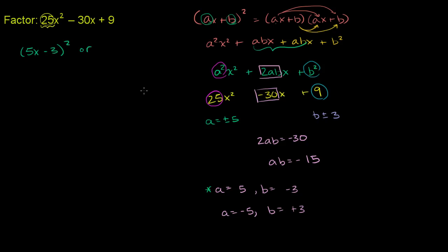or we could switch the signs on the two terms. Or a could be negative 5, and b could be positive 3. Or it could be negative 5x plus 3 squared. So either of these are possible ways to factor this term out here.